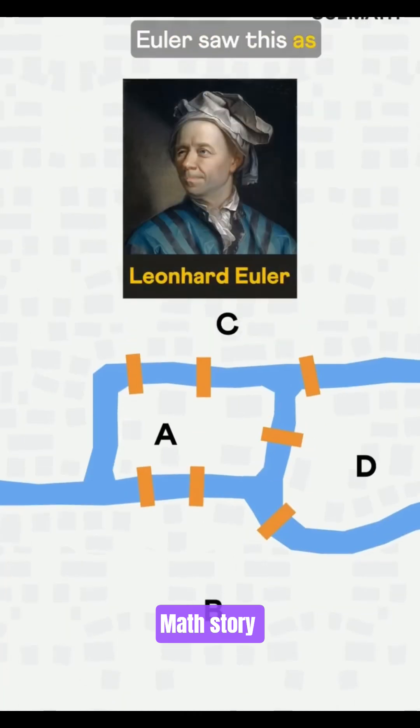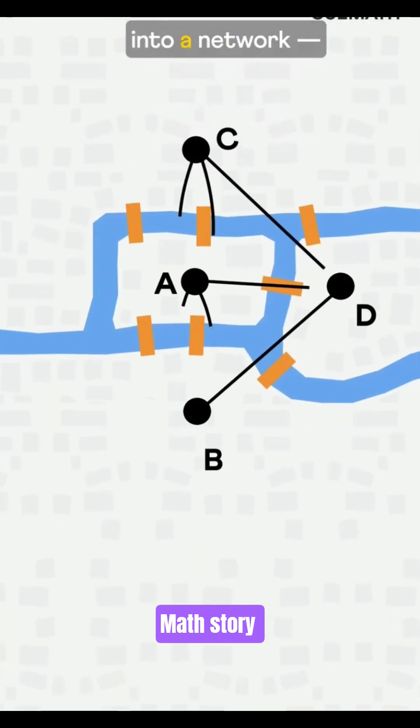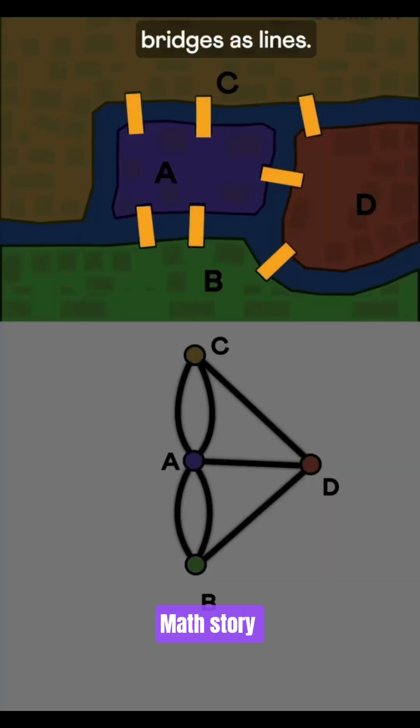Mathematician Leonhard Euler saw this as a math challenge. He turned the city into a network. Land masses as points, bridges as lines.